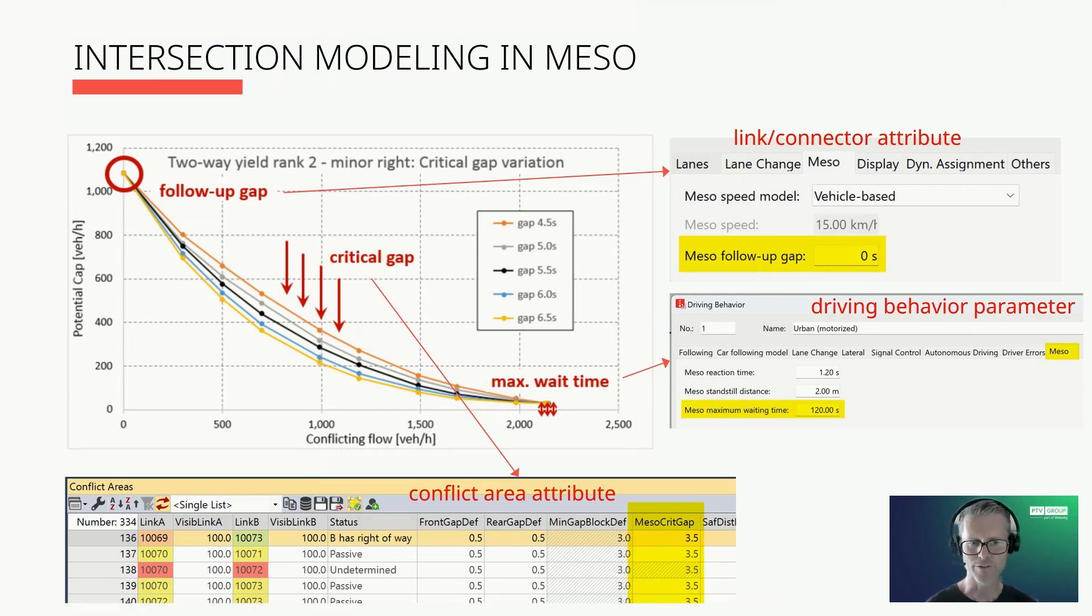When defining values for the meso critical gap, you can refer to established manuals such as HCM. The meso critical gap is a conflict area attribute. You can edit its value also in the meso turn conflict list or in the nodes meso turn conflicts coupled list.